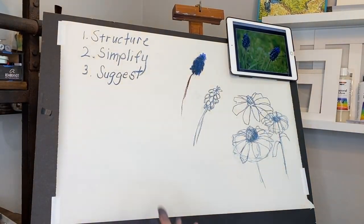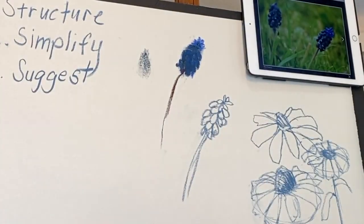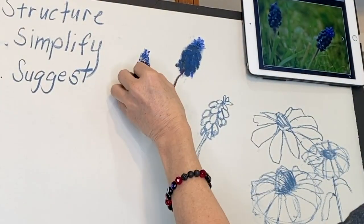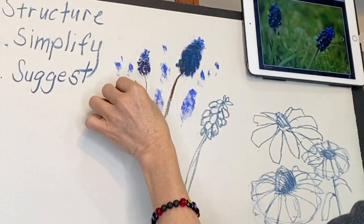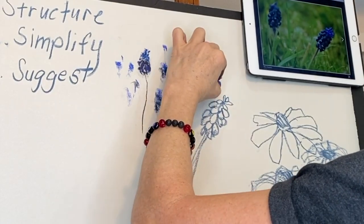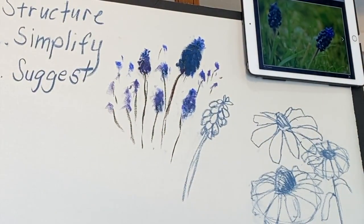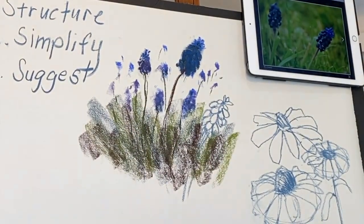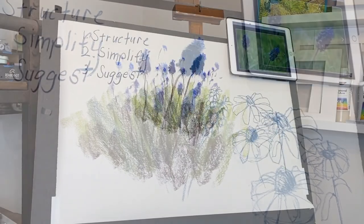I'll do some more of these bluish colored flowers, but first let's talk about step three: suggest. We can simplify and suggest even further. I want to expound on the concept of suggesting rather than focusing on every shape or every petal. The steps are: get the structure, simplify the structure, then just suggest. You suggest even more when an object is not the main area of interest. Give the most detail on your focal area, then suggest even more for areas that are not your focal point.